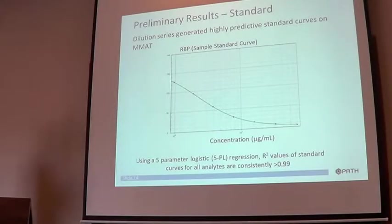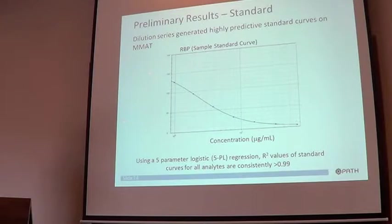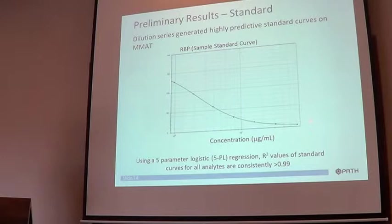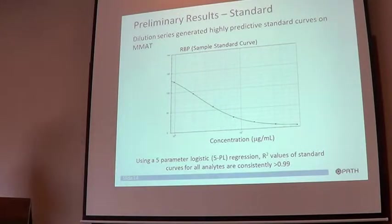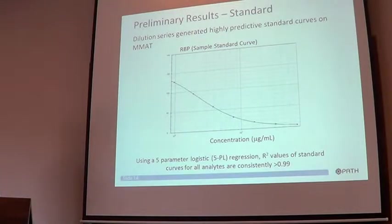I'm not going to show all the data around how well the assays work. Shown here as an example is RBP. It's a competitive reporter assay, so at low concentrations the fluorescence is really high and then it comes down. The key thing to know is that the R-values for all of the individual assays on this pooled array all have R-values of around 0.99 or better.